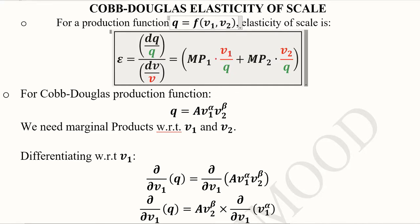The marginal product multiplied with the factor of production divided by that output. This can be repeated for all the factors of production. For the second input, we have MP2, V2, and again Q will remain the same.